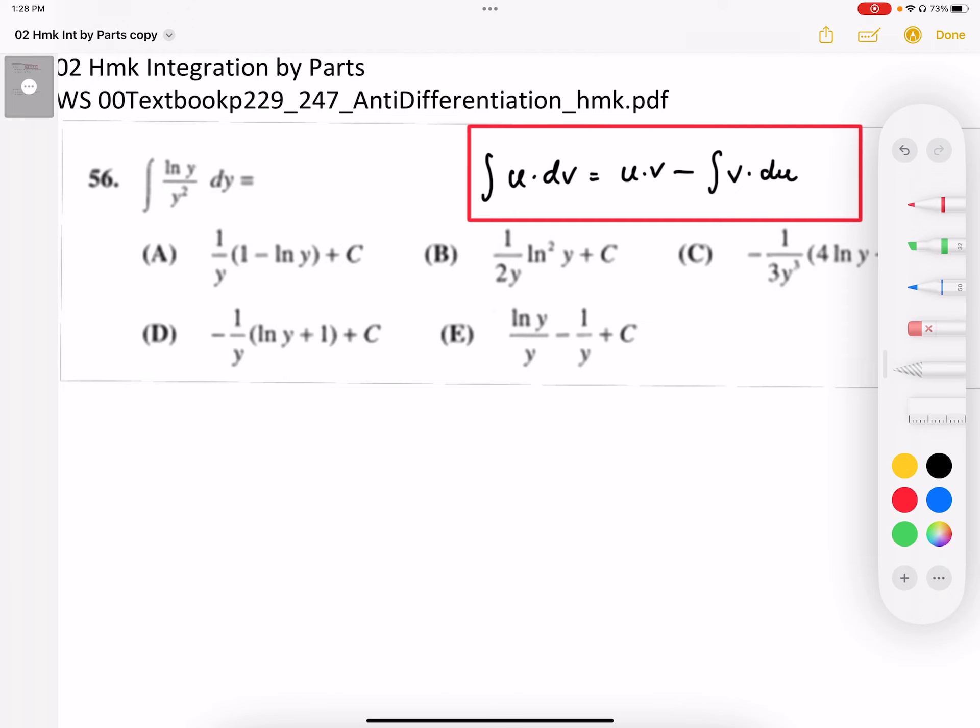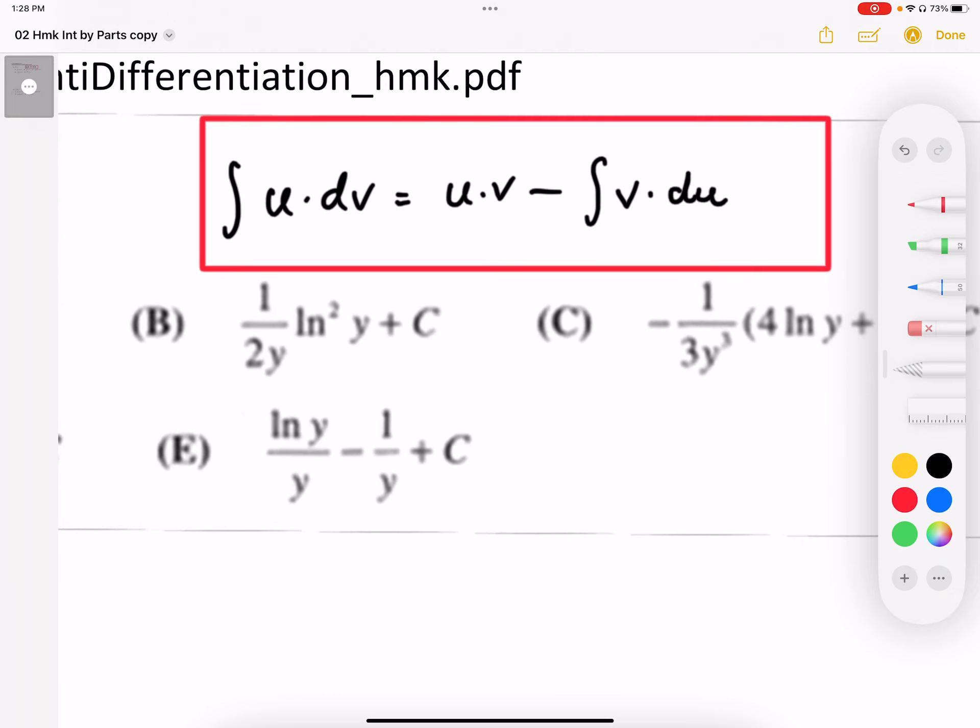The integration by parts formula looks like this and it is showing starting with an integral u dv. It's just rearranging that integral into a new expression, and hopefully that new expression involves a new integral that we can actually anti-differentiate.